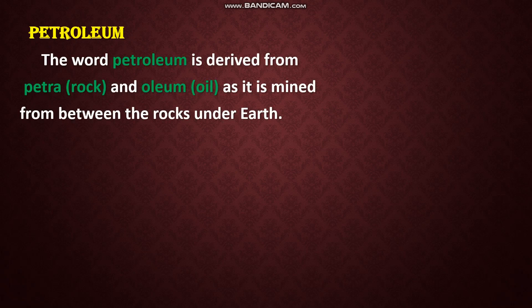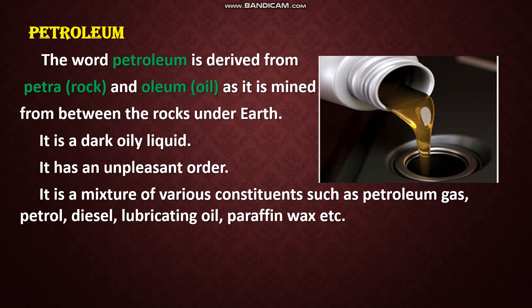The word petroleum is derived from two words: Petra and oleum. Petra means rock and oleum means oil. So why this petroleum name? Because it is mined from between the rocks under the earth. It is a dark oily liquid and has an unpleasant odour. It is a mixture of various constituents such as petroleum gas, petrol, diesel, lubricating oil, paraffin wax, etc.